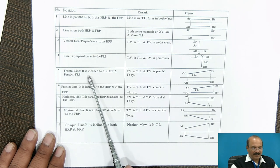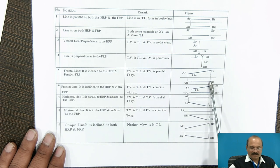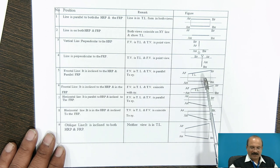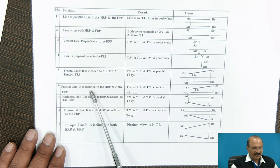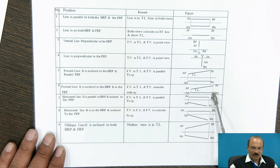Next we go with the frontal line. It is inclined to the HRP and parallel with FRP. Parallel with FRP means in the another view we are going to get this as a true length. If the line is parallel to any reference plane, in the other view you are going to get it as a true length. The frontal line is inclined with the HRP and the distance to FRP is made zero.